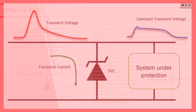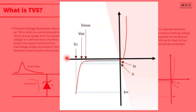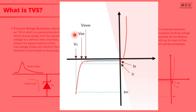The TVS is reverse biased. When a transient occurs, the TVS will go into avalanche breakdown and the large current will be conducted through the TVS, resulting in a lower clamped voltage so that the system is protected. Looking at the graph here, this shows the behavior and characteristics of TVS diodes — specifically the IV curve of a unidirectional TVS diode.